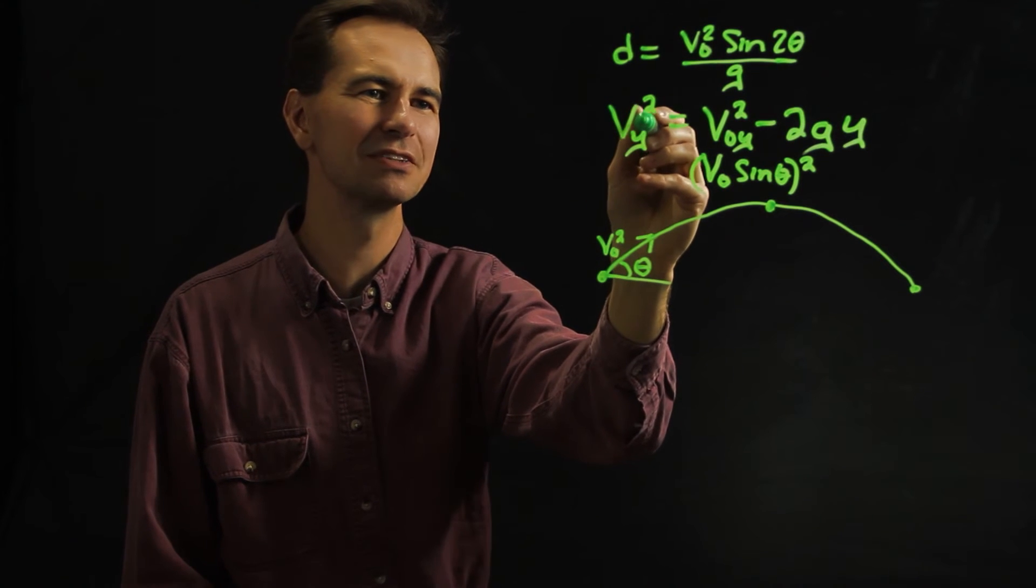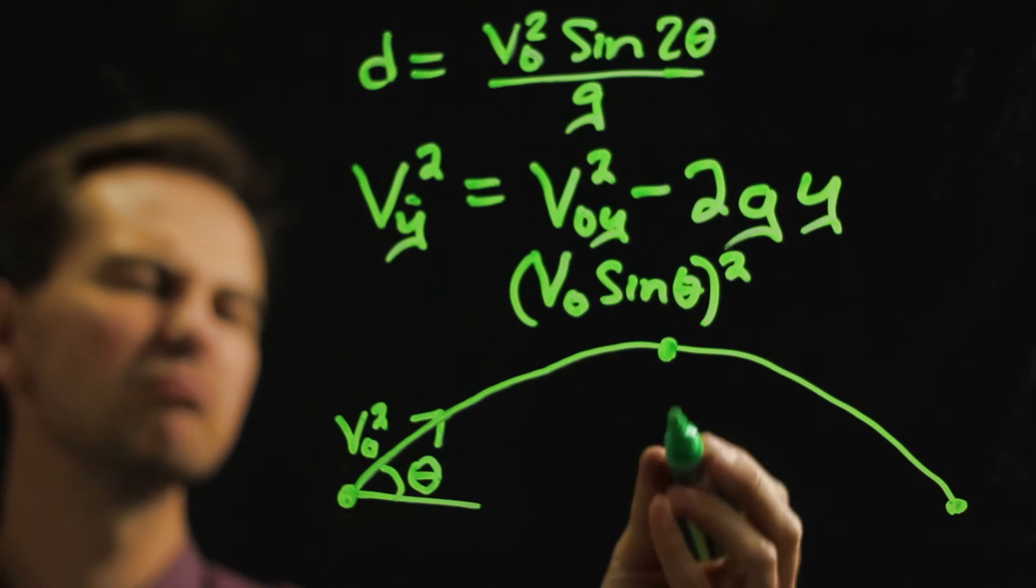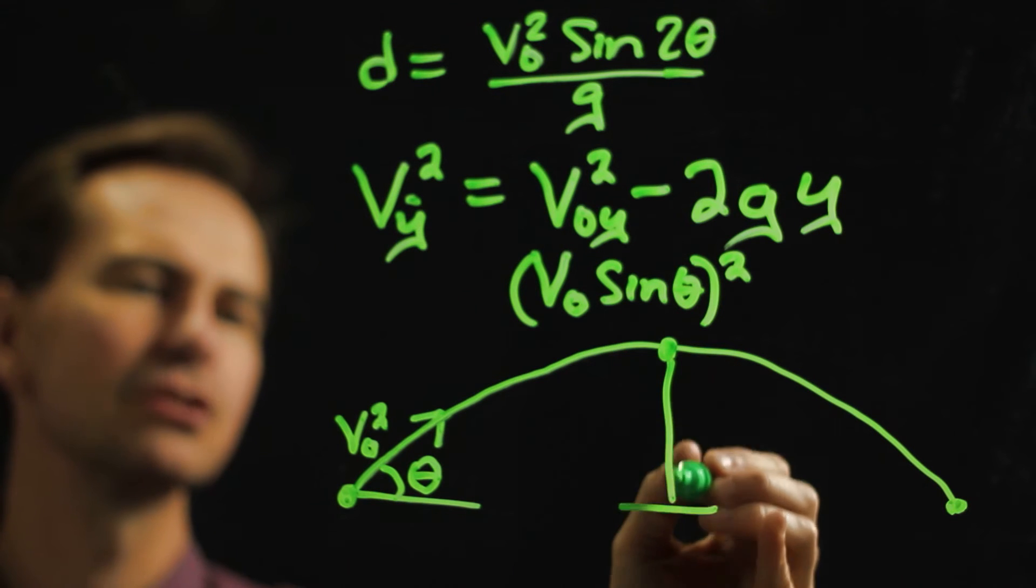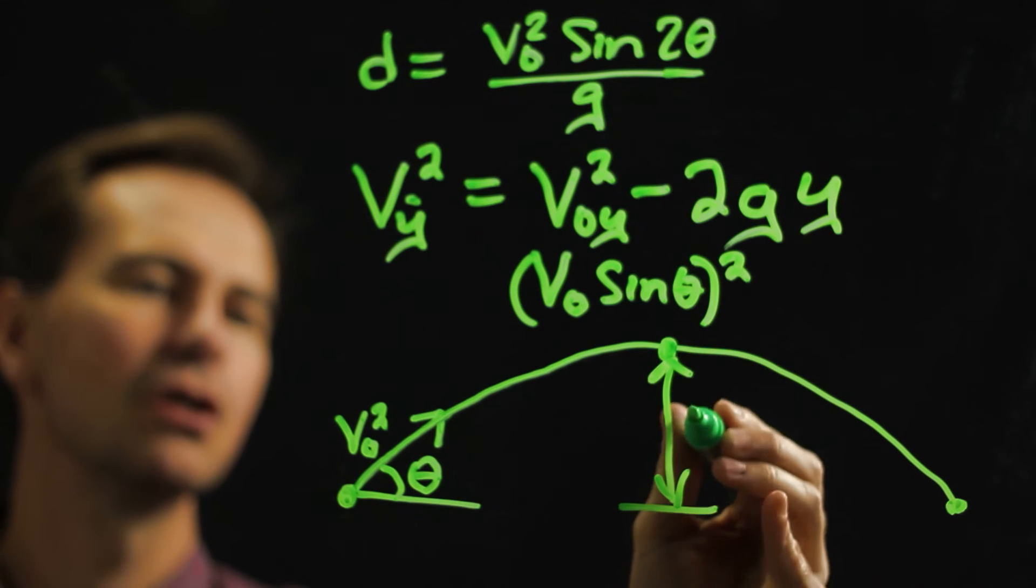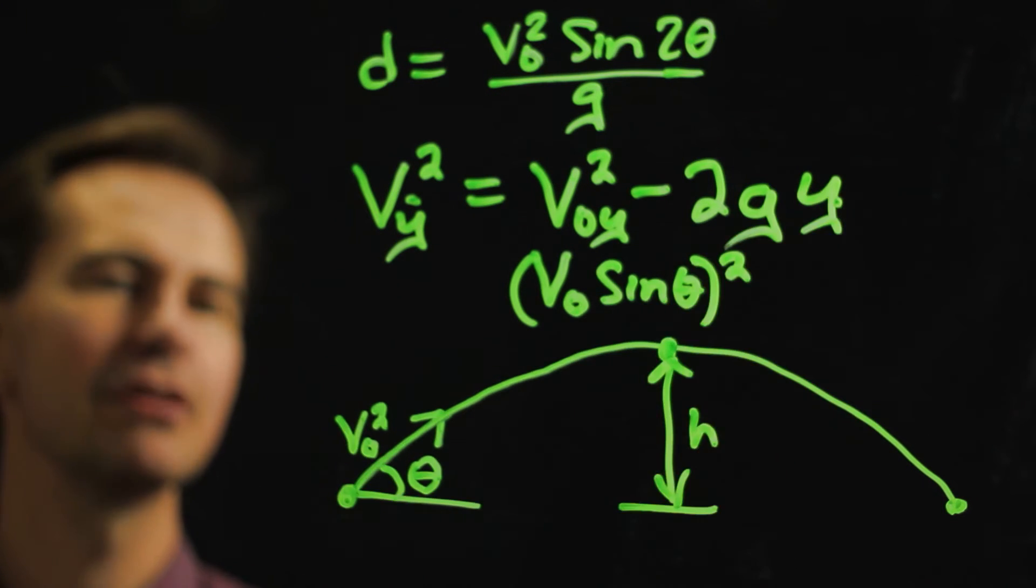So we would plug zero in right here and we could call this total distance right here, h. We could plug h in right there.